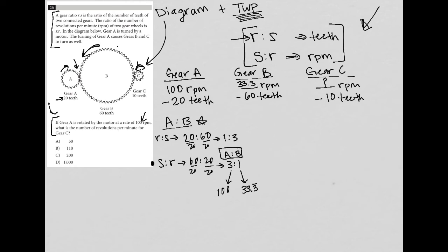Now I can go to my B to C relationship. For its R to S, just the number of teeth, it would be 60 teeth for B to 10 teeth for C. And that would reduce down to 6 to 1, just by dividing by 10. So that's for my teeth ratio, but then my S to R, which is the RPM ratio, would turn into 1 to 6. So I'm just reversing my 6 to 1.